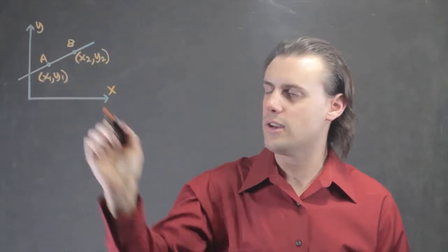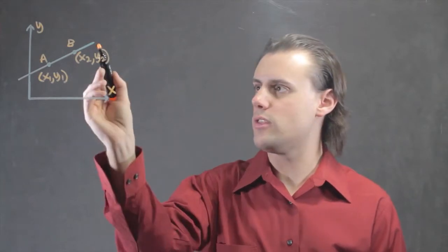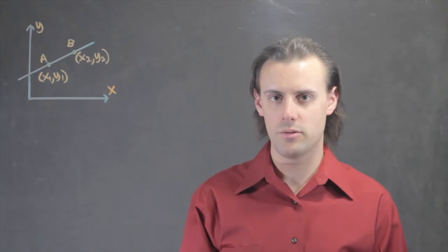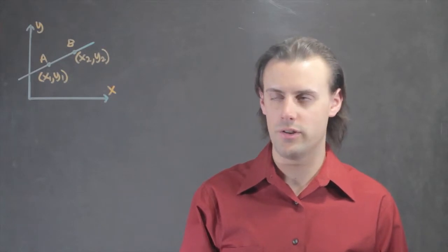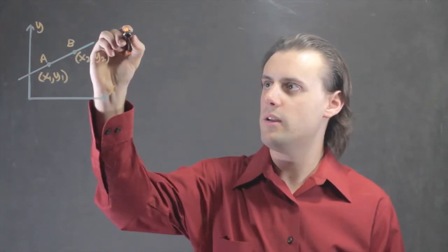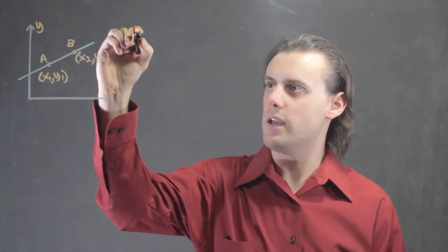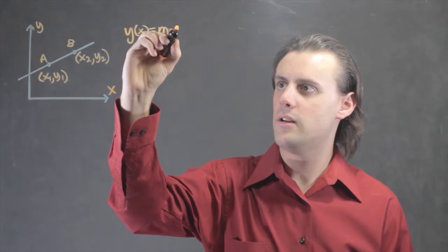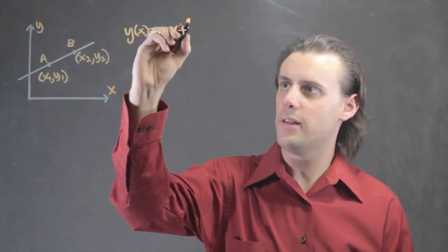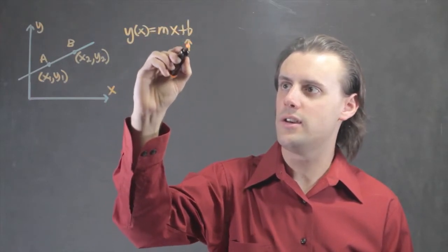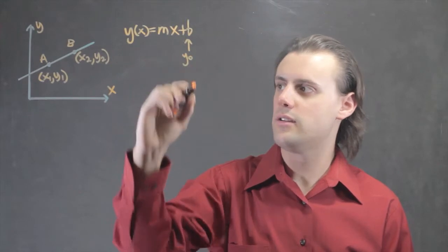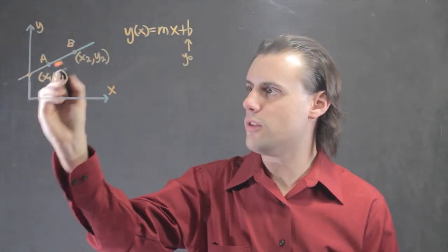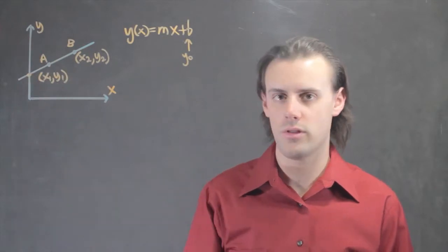What we want is an equation that describes the line that connects both of these, and that general form can be called the slope-intercept form, which is y as a function of x is equal to the slope of the line m times x plus b, where this is y naught. In other words, it's the y-intercept, where the line crosses through the y-axis.